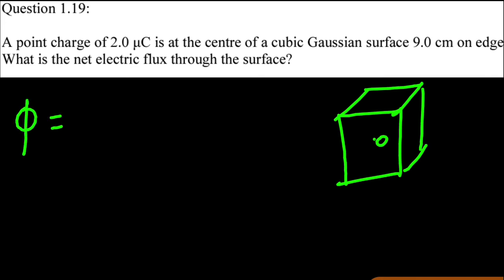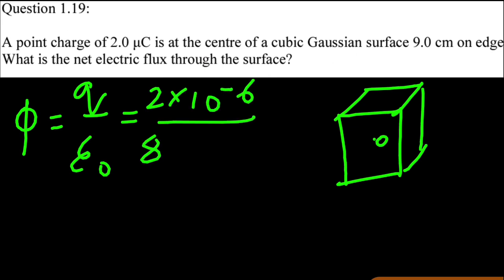Using Gauss's law and that is charge upon epsilon naught. Charge enclosed. Enclosed charge is 2 micro coulomb upon epsilon naught is 8.85 into 10 raised to the power minus 12.